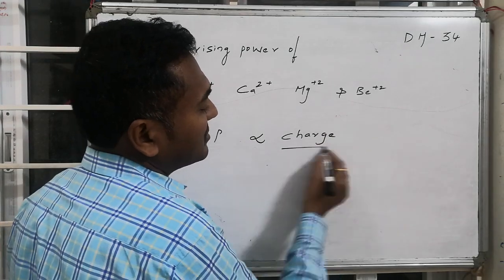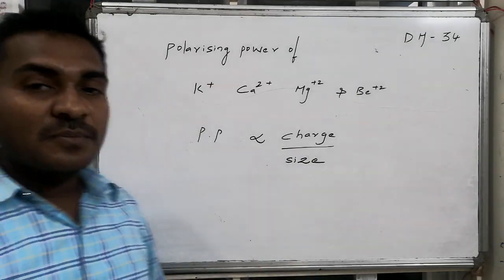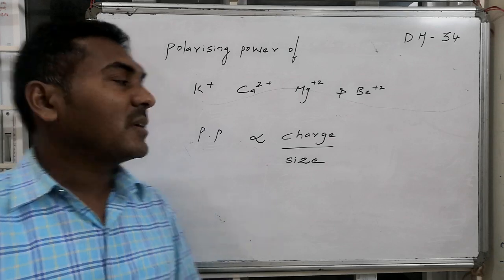And also inversely proportional to size of cation. The lesser the size, more will be the polarizing power. The more the charge present on the cation, more will be the polarizing power.